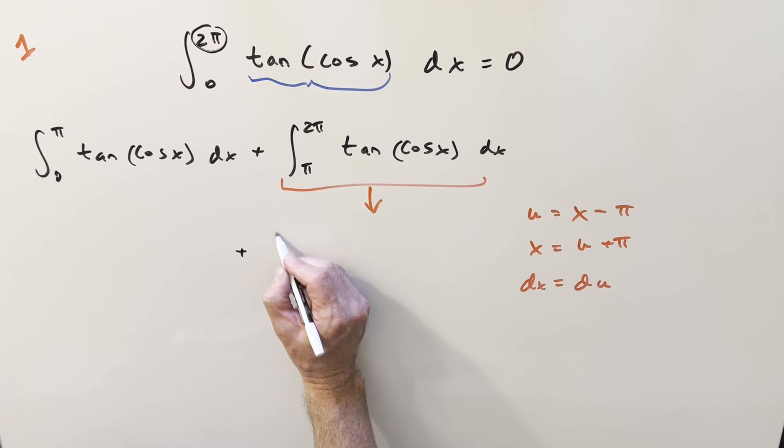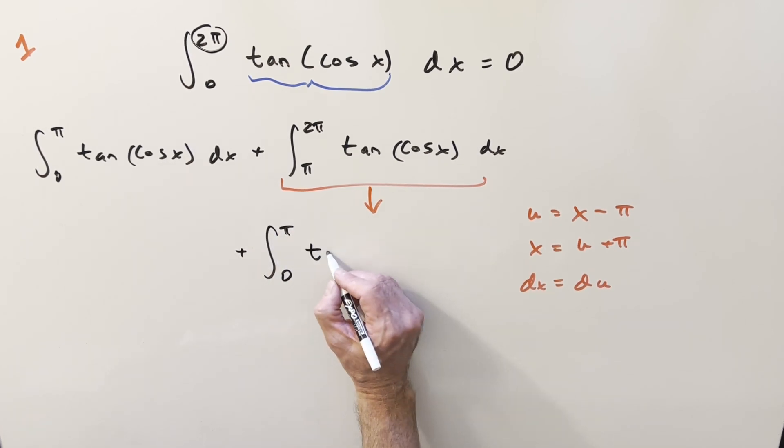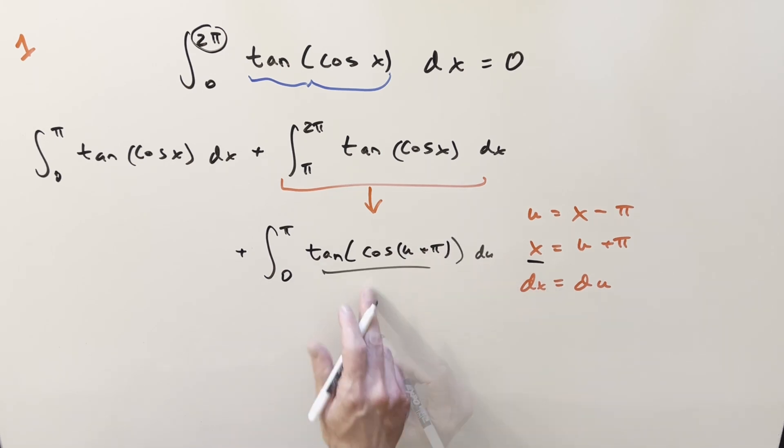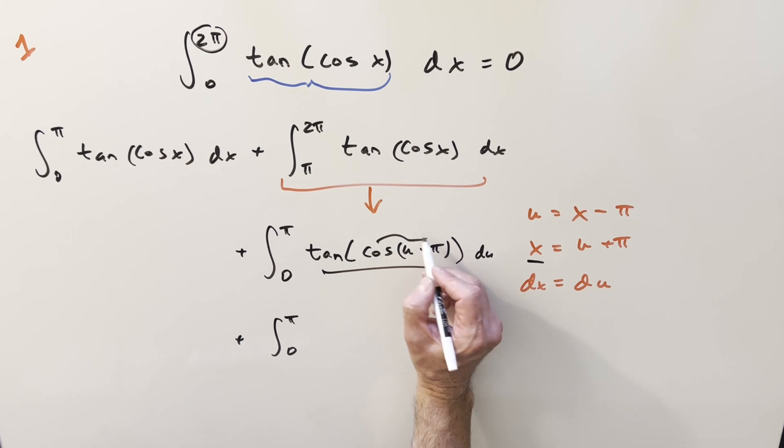So then we'll just update this integral right here and bring it down. What's going to happen on this is this is going to become, now we're going from zero to pi on this. We get, if we just substitute in our x value right here, this is going to become tan cosine u plus pi.